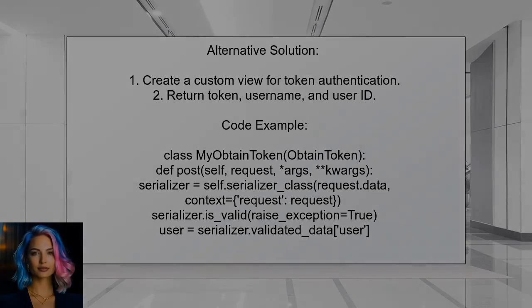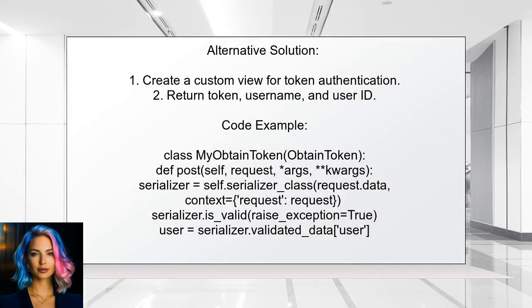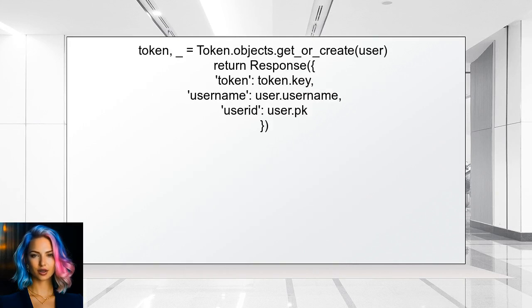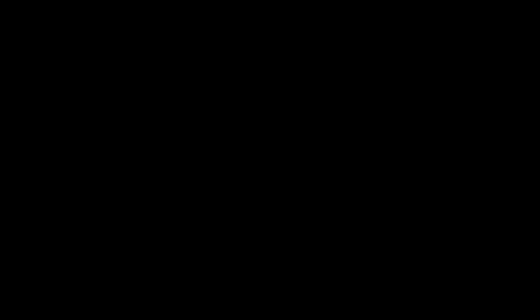Yet another approach involves creating a custom token authentication view. This method allows you to return both the token and user information — such as the username and user ID — when obtaining the authentication token.